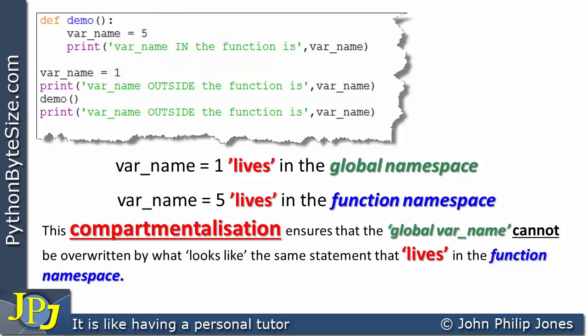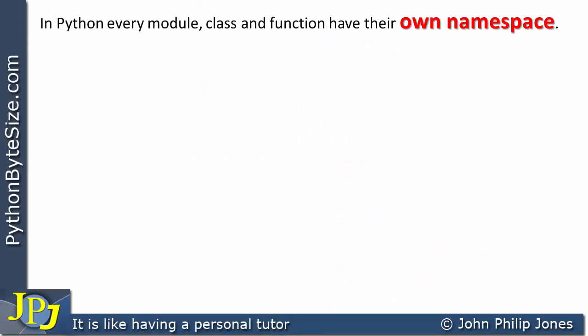Think of it this way: you've got two tutorial groups, Tutorial Group A and Tutorial Group B, and two students called Fred Blogs — one in each group. If you call out 'Can I see Fred Blogs from Tutorial Group A?', the one in Group A comes to see you, and the one in Group B — who heard his name — realizes it's not him. In Python, every module, class, and function has its own namespace, and we've seen with tkinter an example of importing a module.